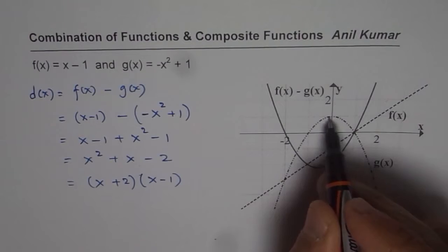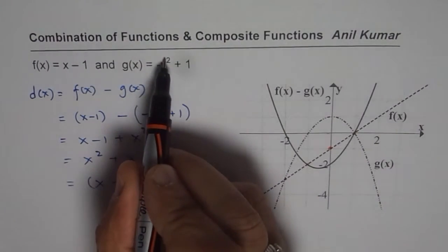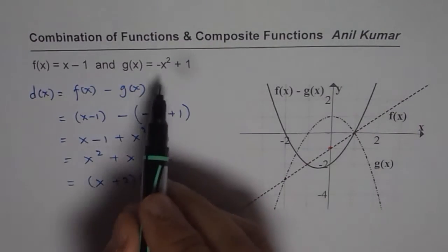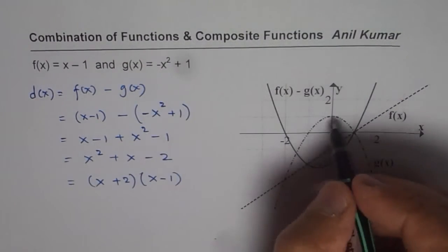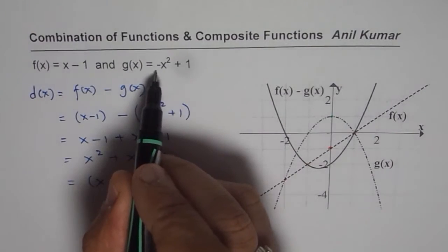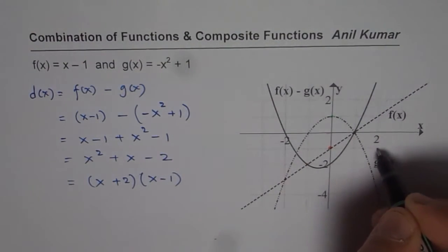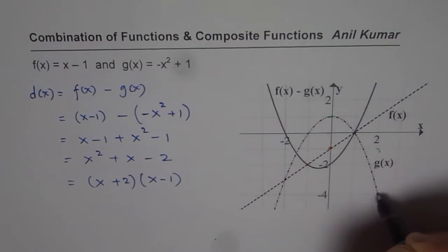Here we have g of x, which is minus x square plus 1. So in g of x what we did was, our maximum is at 1, opens downwards, steps are 1, 3, 5, 7. So we can do 1 step and then 3 steps, 1, 2 and 3.